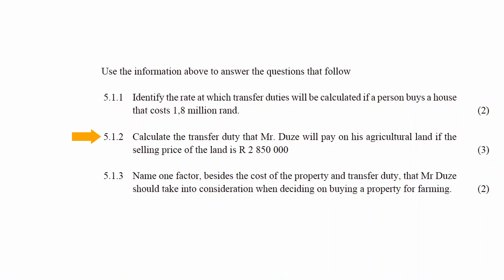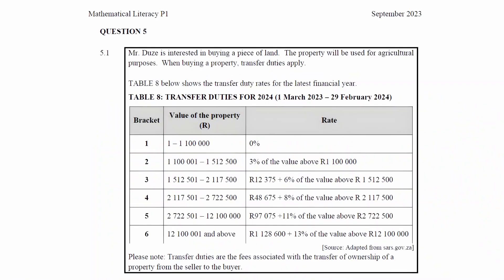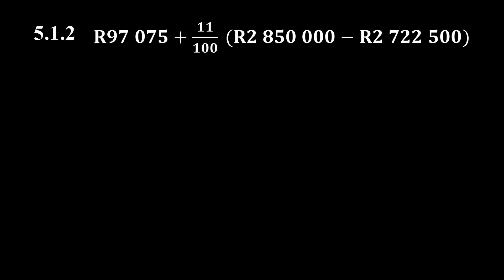In Question 5.1.2, you have to calculate the transfer duty that Mr. Doozy will pay on his agricultural land if the selling price of the land is R2,850,000. Now R2,850,000 falls into the fifth bracket. The rate for this bracket is R97,075 plus 11% of the value above R2,722,500. To calculate the transfer duty, we use the following equation: R97,075 plus (11/100) multiplied by the difference of R2,850,000 and R2,722,500. This equals a transfer duty of R111,100.